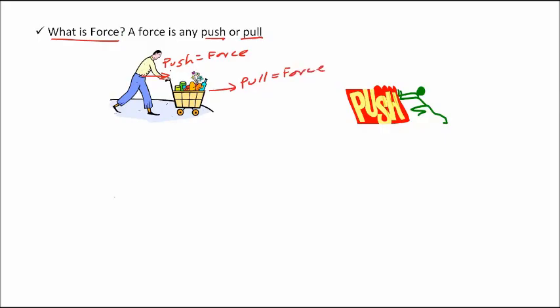So a push or a pull represents a force being applied to an object. Another important thing to remember is the object that's experiencing the push or the pull does not even have to move in order for it to experience a force. If this guy pushes on this box, the box experiences the push. The box experiences the force, even though the box doesn't move.